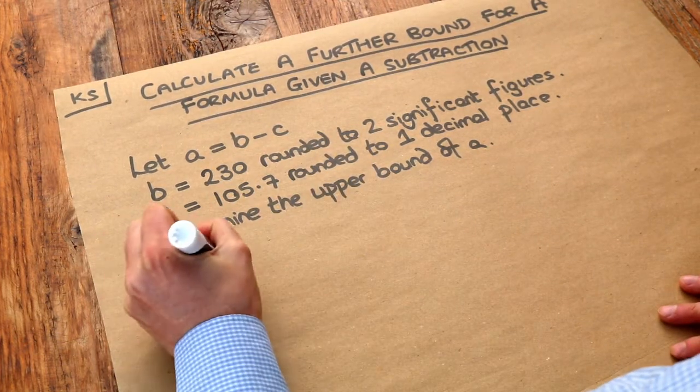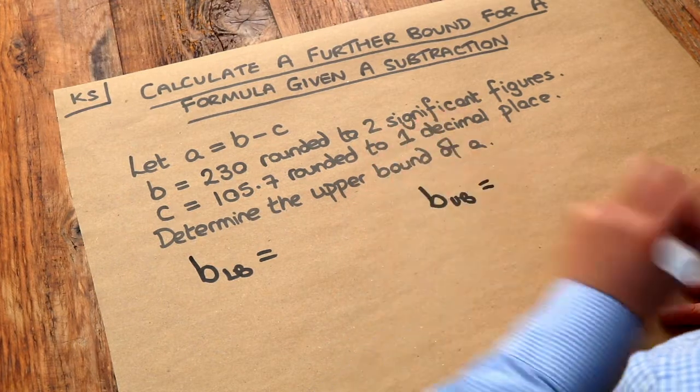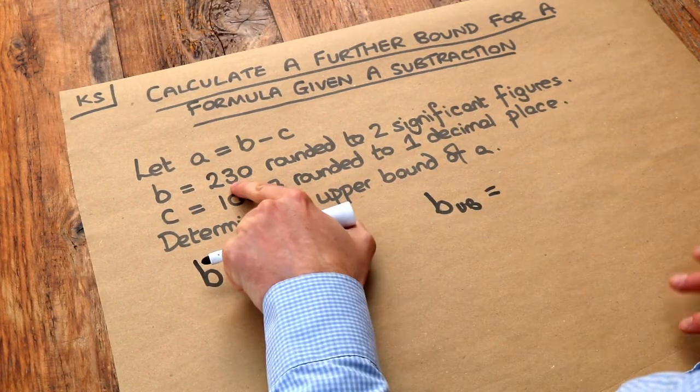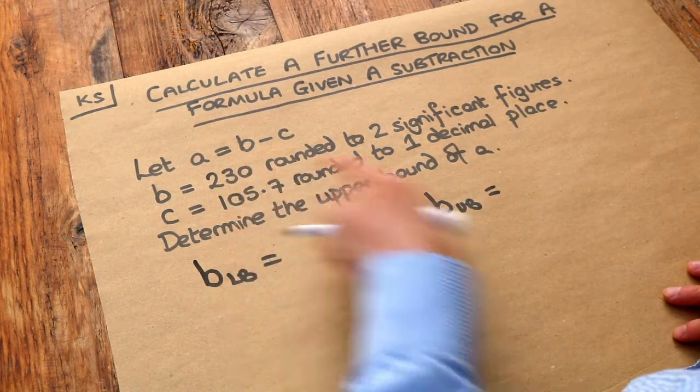So B lower bound, LB for lower bound, and B upper bound, UB for upper bound. What's the biggest that B could have been? Now think what's the lowest this could have been rounded to two significant figures?